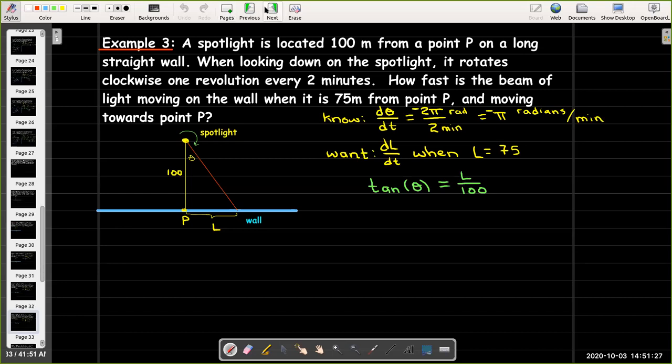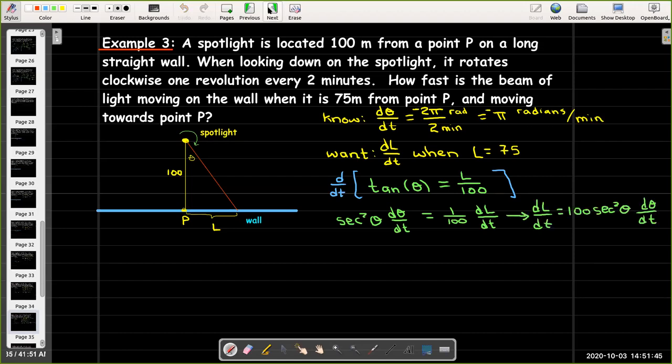Now, let's differentiate with respect to t. I get secant squared theta dθ/dt equals 1 over 100 dL/dt. I can solve that for dL/dt. And, I see that I have made, no, I did not make a mistake. That is, that algebra is correct. dL/dt will be 100 secant squared theta dθ/dt.